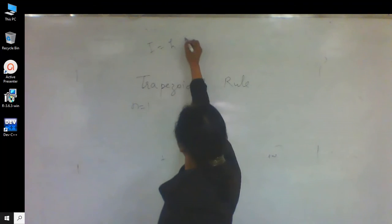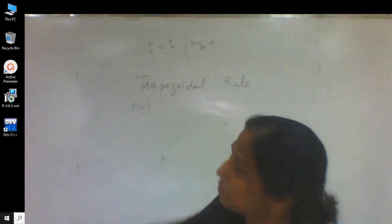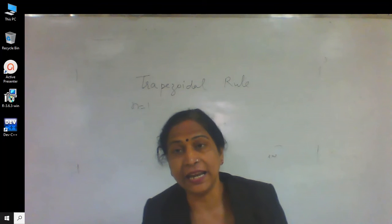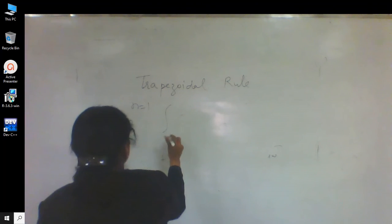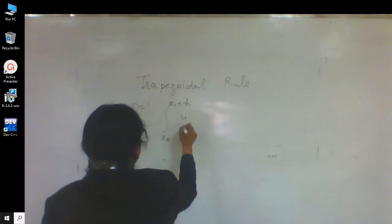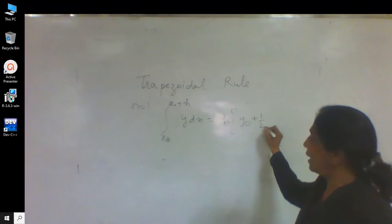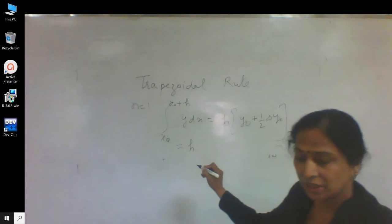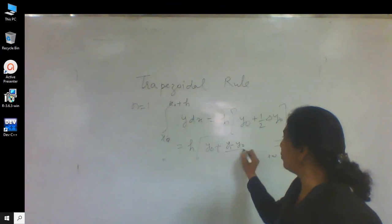The formula is h into the values inside — n into y naught plus next values. So putting n=1 and neglecting the second and higher differences, we get the integral from x naught to x naught plus h of y dx is equal to h into y naught plus (1/2) delta y naught.